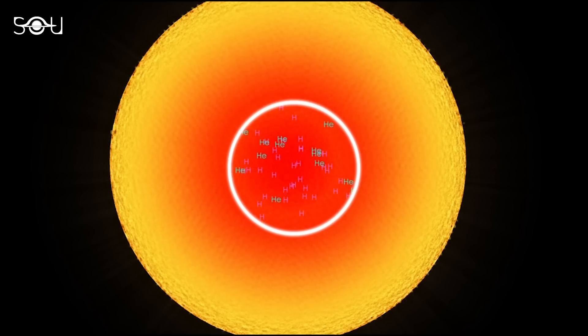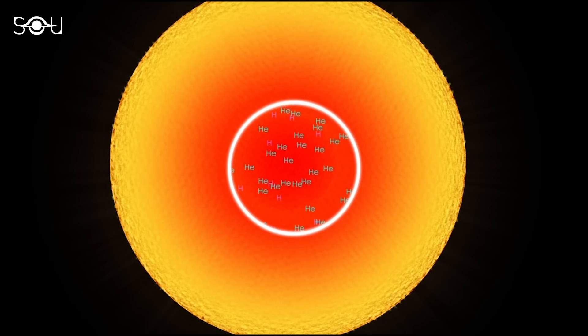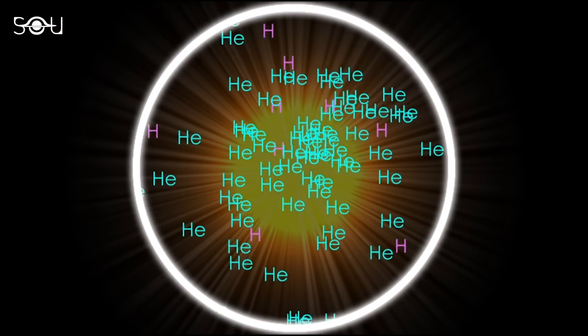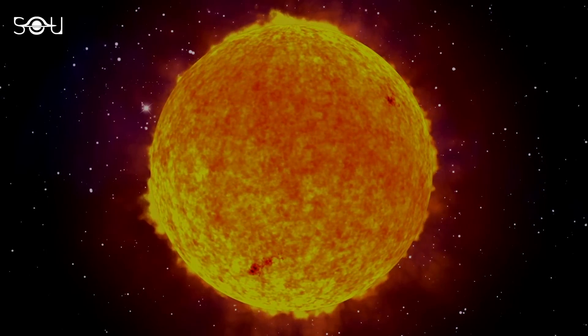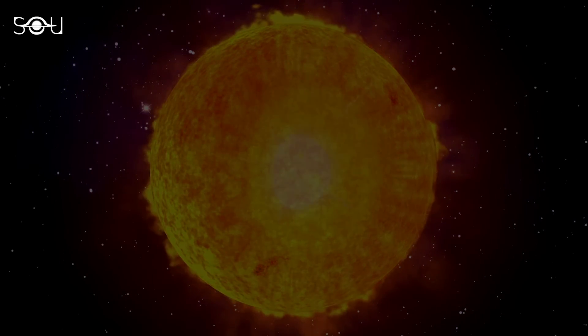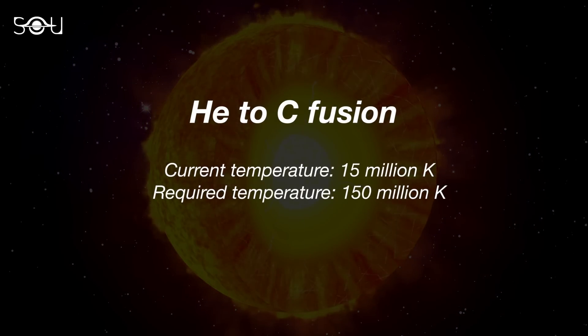However, once the hydrogen supply in the core is depleted, this nuclear fusion ceases, disrupting the equilibrium. The next nuclear reaction in the core involves fusing helium into carbon. It cannot begin instantly because the temperature required for that is 10 times more than the current temperature of the helium core.